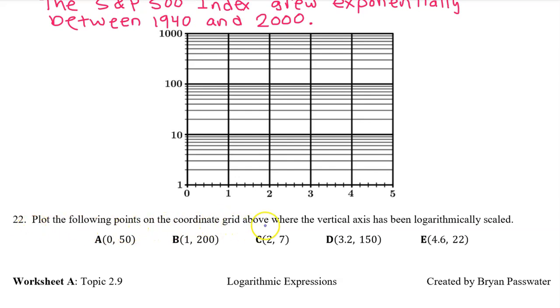Plot the following points on the coordinate grid above where the vertical axis has been logarithmically scaled. Point A is 0, 50. So I'm going to start at 0 and I'm going to head towards 50. That's somewhere between 10 and 100. The bold line is 10. As we pass 10, we count by tens. So it goes 10, 20, 30, 40, 50. 0, 50 is right here. I need you to notice that 50 is closer to 100 than it is to 10 on a log scale. We're used to thinking of numbers with a 5 as being right in the middle, not on a log scale. They're going to be closer to the top line than the bottom line.